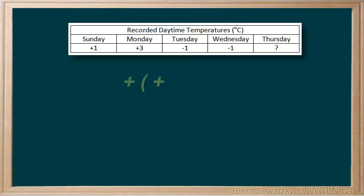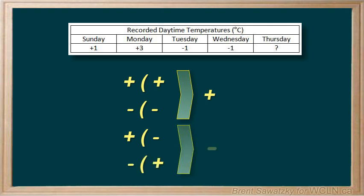When we have a positive positive together or a negative negative we can replace them with a plus. If we have a positive negative or a negative positive together we can replace those with a minus.